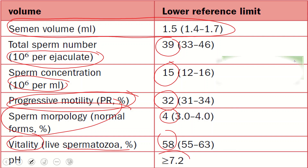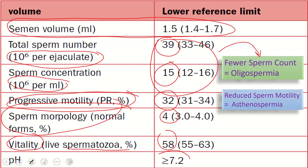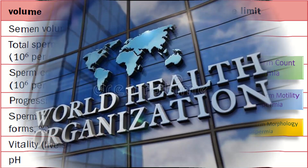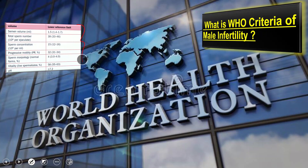If the sperm count is less than 39 per ejaculate or less than 15 per ml, it is called oligospermia. If sperm motility is less than 32%, it is called asthenospermia. When both number and motility are low, the condition is called oligoasthenospermia. When more than 4% of sperms are abnormal in morphology, it is called teratospermia. According to WHO criteria, male infertility is diagnosed when two or more semen analyses show one or more variables below the 5th centile.